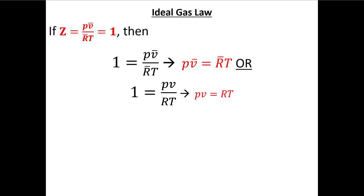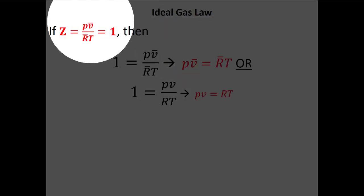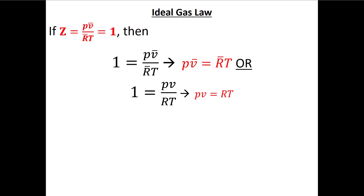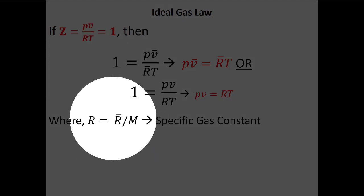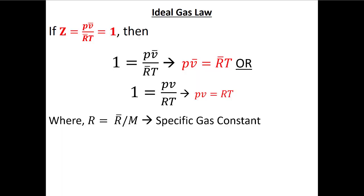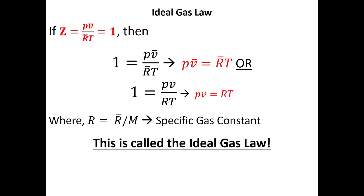In high school maybe your teacher told you to use this equation without explaining the conditions. What we're teaching you in this class is that as engineers we need to know the conditions for applying different equations. We can use the ideal gas law when we have an ideal gas — but when do we have an ideal gas? We have an ideal gas when the compressibility factor is equal to, or approximately equal to, one.